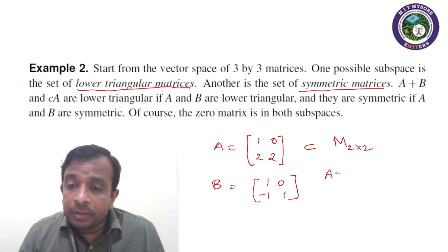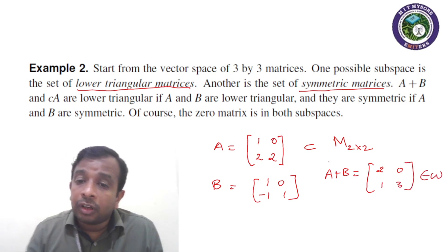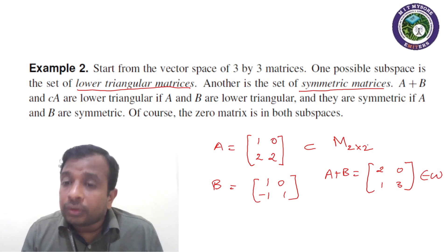Then A plus B would result in again a lower triangular matrix, that is, 2, 0, 1, 3, which belongs to W—that is, subset of M2 cross 2, that is, subset of lower triangular matrices. And also C into A, scalar multiplication...